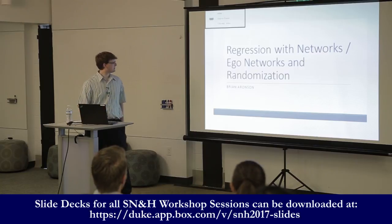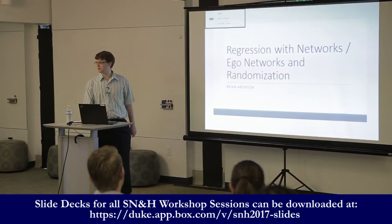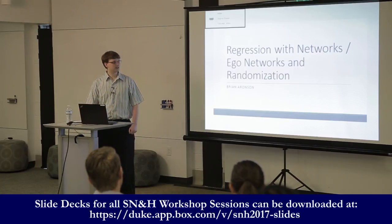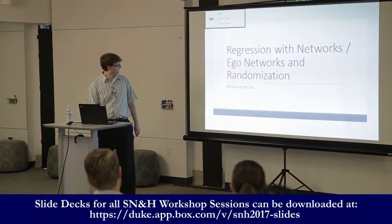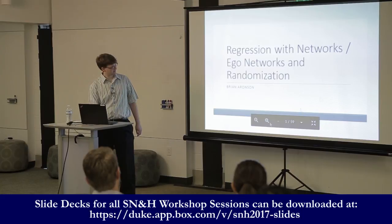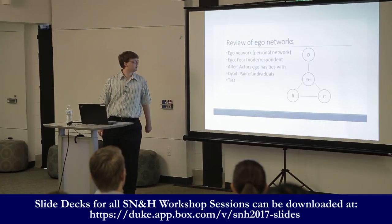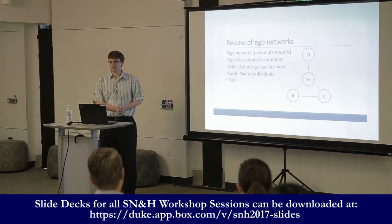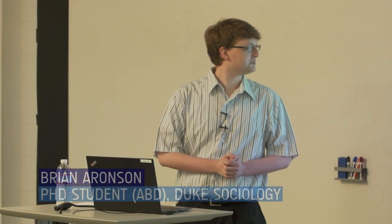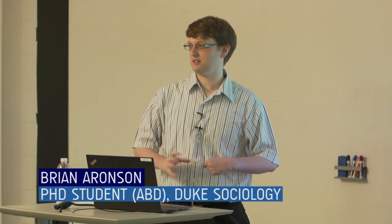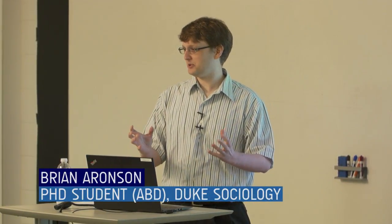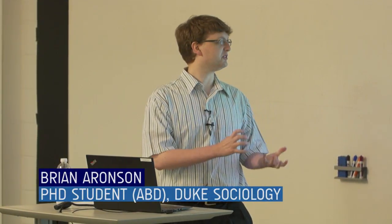So we're going to talk about ego networks and randomization. Let's start with a review of the very basic terms. What is an ego network? An ego network is basically a personal network — a network of people around a focal node.